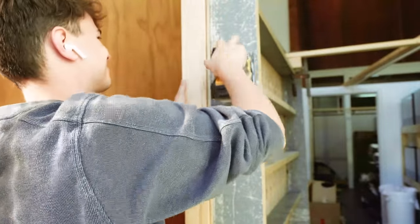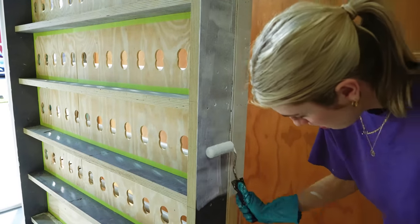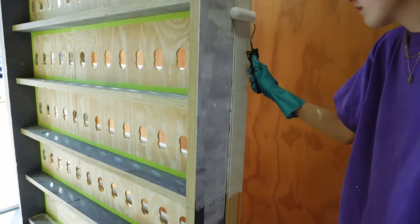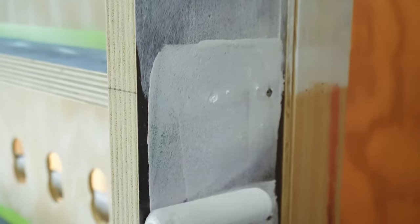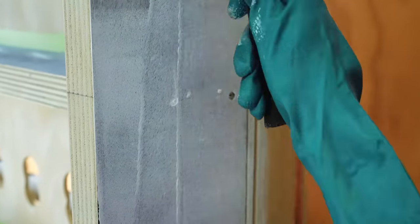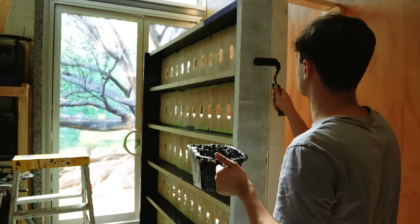After sanding the stand down, it was time to paint it. So you can see me and Sarah here working away at the painting. We thought we were going to paint the outside white, but we ended up painting the outside actually black.